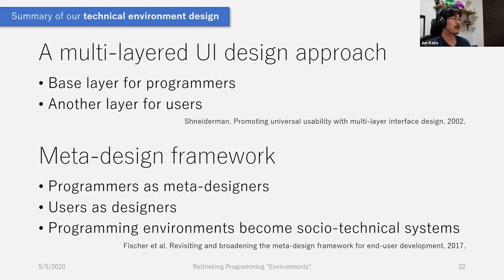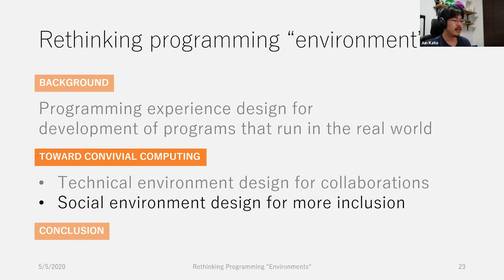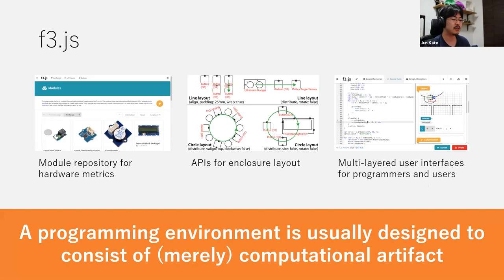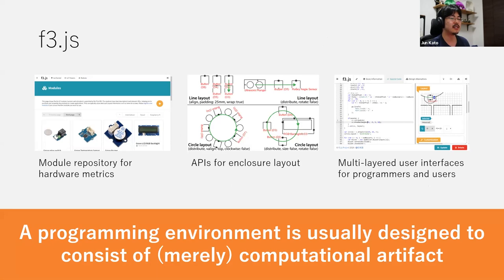I have introduced the social feature built into the F3.js environment, technically enabling collaboration between people with diverse technical backgrounds. Now I'd like to follow up on some limitations of the technical approach. Please note that this part is really an ongoing effort and could have rough discussions without definite conclusions, so I'd appreciate feedback such as pointing to relevant references. As shown in this talk, programming environments such as F3.js are usually designed to consist of computational artifacts, such as software components, databases, or abstractions gained from domain-specific knowledge.